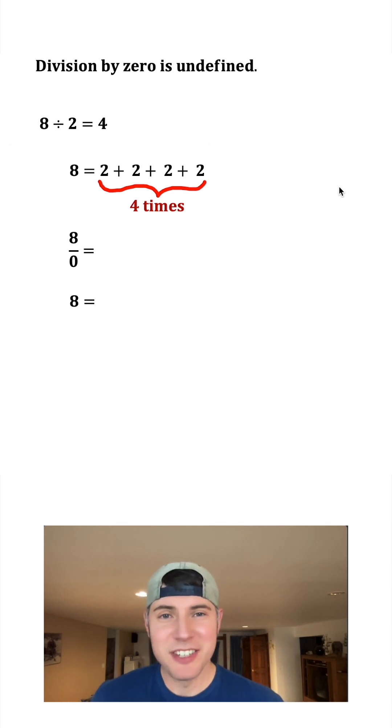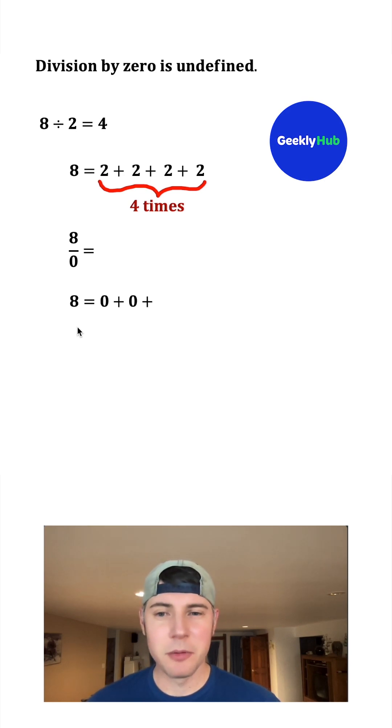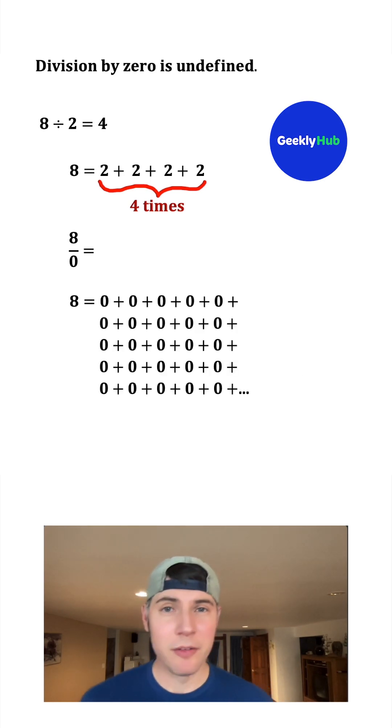This is one way you can think of division. If we do 8 divided by 0, we can take the 8 and do 0 plus 0 plus 0 plus 0, and we'll be able to do this forever. You might wonder, well why don't we just call it infinity? Because it's going to be an infinite number of zeros. Why is it that we call it undefined?